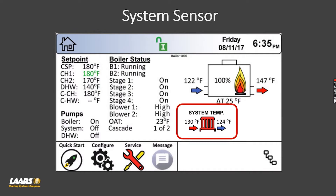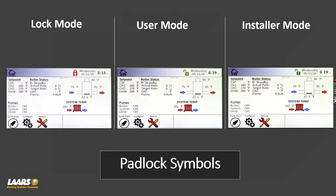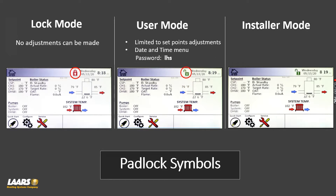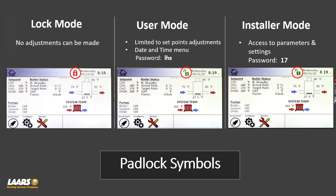On that lead boiler, on the home screen you should see the icon for the system sensor. We'll also talk about the padlock symbols — there are three padlock modes: lock mode where no adjustments can be made, user mode where you can only make setpoint adjustments, and installer mode. For cascading, you want to be in installer mode and that password is 17.